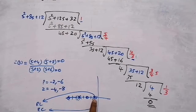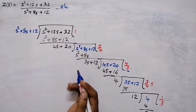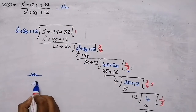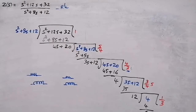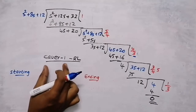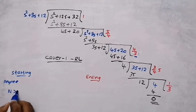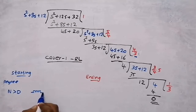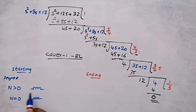Since alternate poles and zeros exist on the negative real axis, this is either RL or RC. If a pole is at the beginning (closest to origin), it is an RL circuit; if a zero is at the beginning, it is RC. Here the pole at −2 is closest to the origin, so this is an RL network. In Cauer 1, the starting element is determined by the degree of numerator vs. denominator: if degree of numerator is greater, start with an inductor; if degrees are equal, start with a resistor.